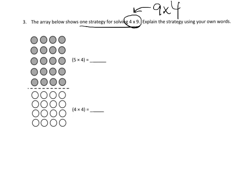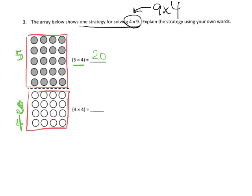They took the 9 and they broke it up into two smaller arrays. We've got the upper array is a 5 by 4, 5 times 4, that's 5 rows of 4, and that's 20. And 4 rows of 4, and that's why we have 4 times 4 here, and that's 16. Now we can add them together: 20 plus 16 equals 36. So the strategy in our own words, well students are going to be able to write a lot of different ways, but basically it's going to be some sort of variation on the theme of...